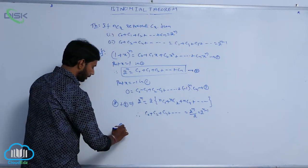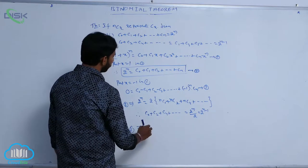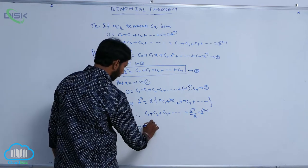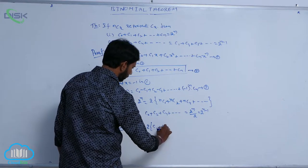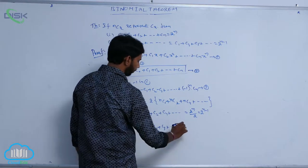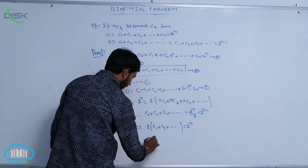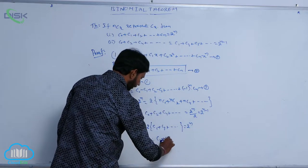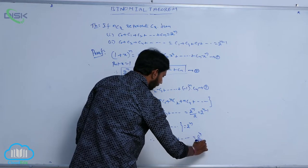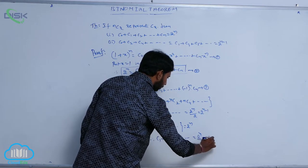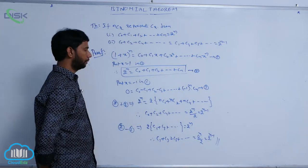And again, subtracting condition 3 from condition 2 gives: 2(C₁ + C₃ + C₅ + ...) = 2ⁿ, so C₁ + C₃ + C₅ + ... = 2ⁿ/2 = 2ⁿ⁻¹.